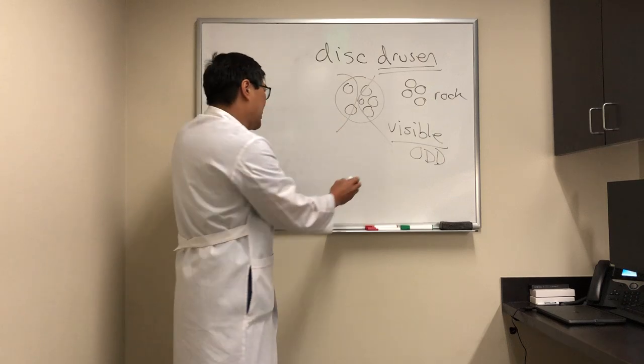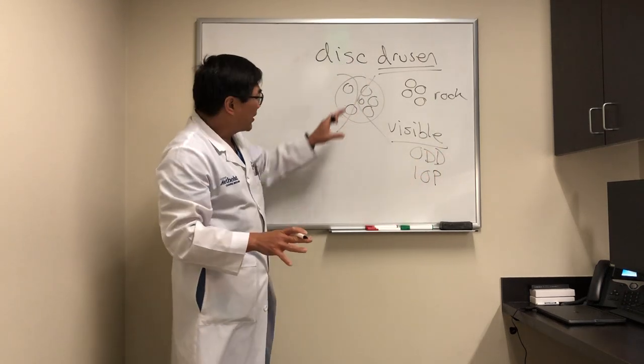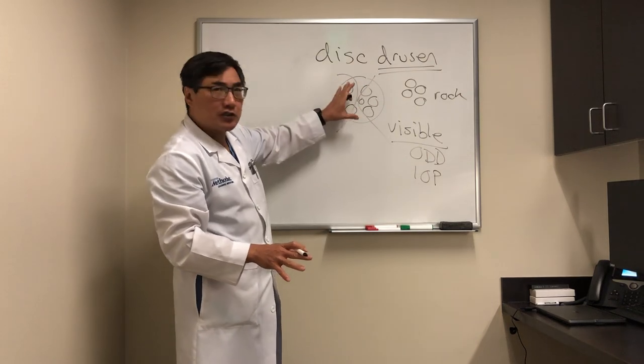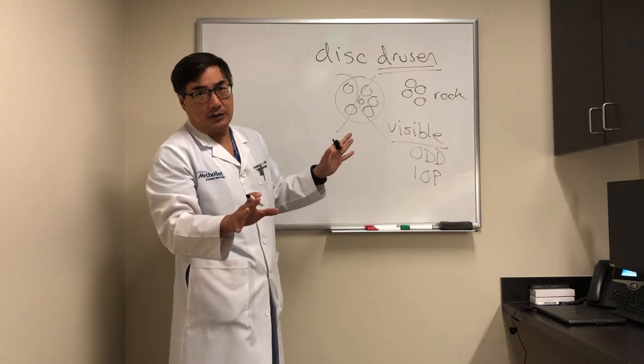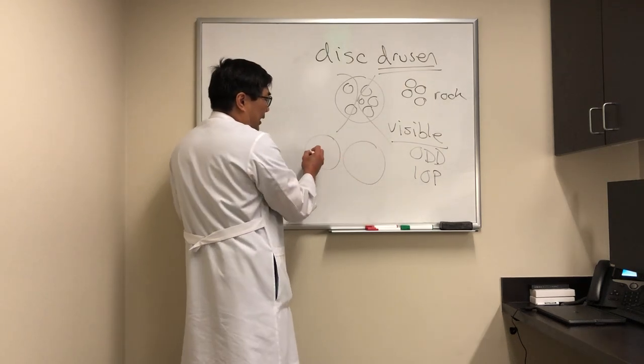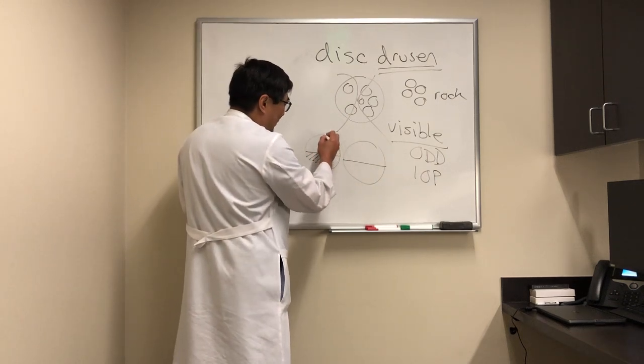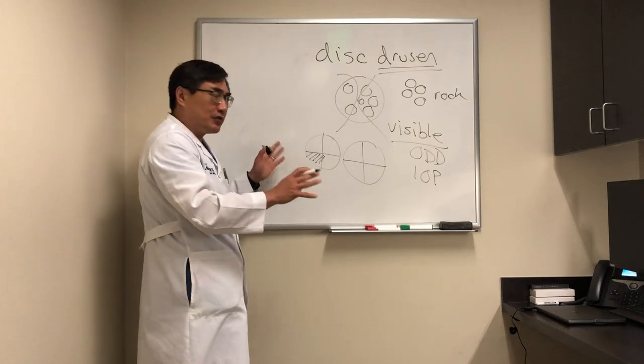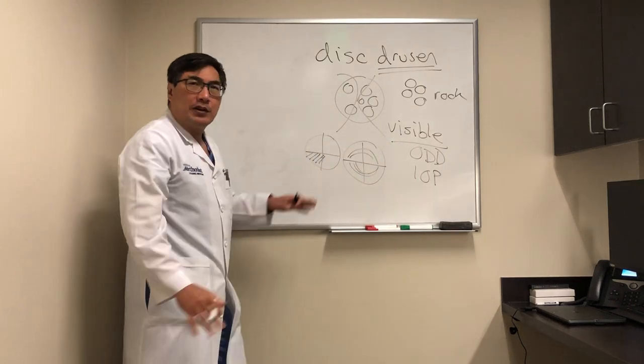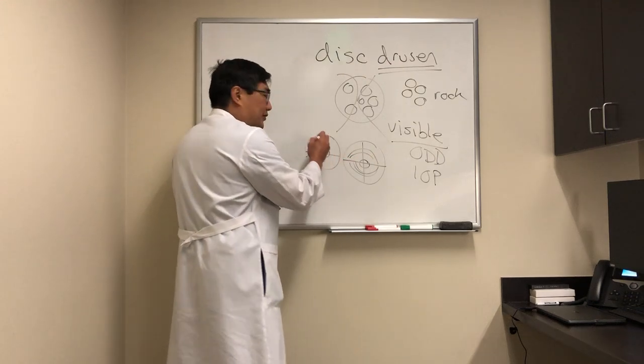Some people believe that we should treat the intraocular pressure if it's elevated, or they're ocular hypertensive, because it's going to be hard to tell glaucomatous type cupping in this, and the field defect of disc drusen and glaucoma look very similar. So the field defects in optic disc head drusen and in glaucoma tend to respect the horizontal meridian. The inferior nasal step is a super common type of visual field defect, but it can be arcuate in shape, or it can be nerve fiber layer of any kind of distribution. What it doesn't usually do is it usually spares the center.